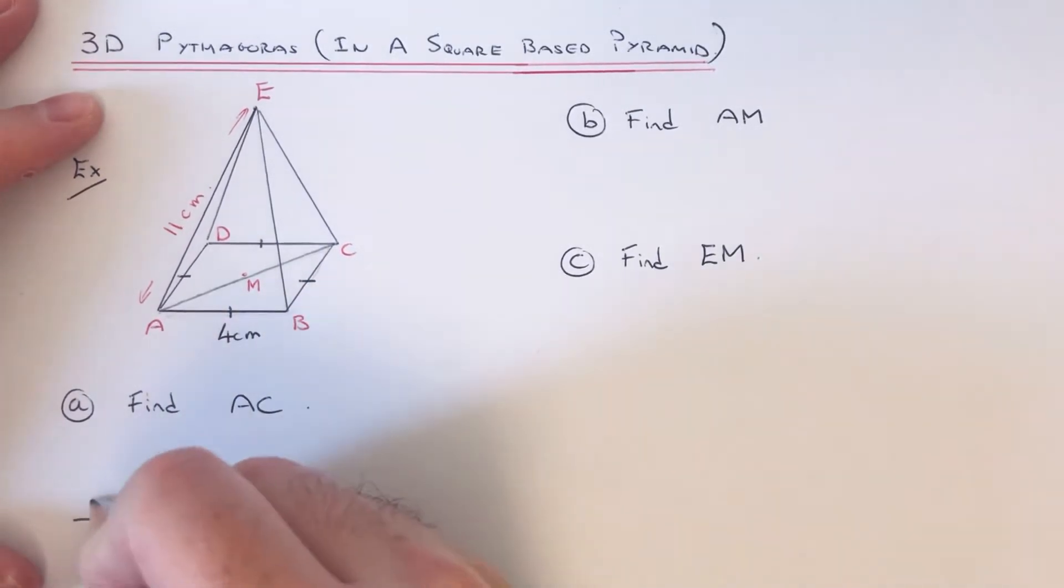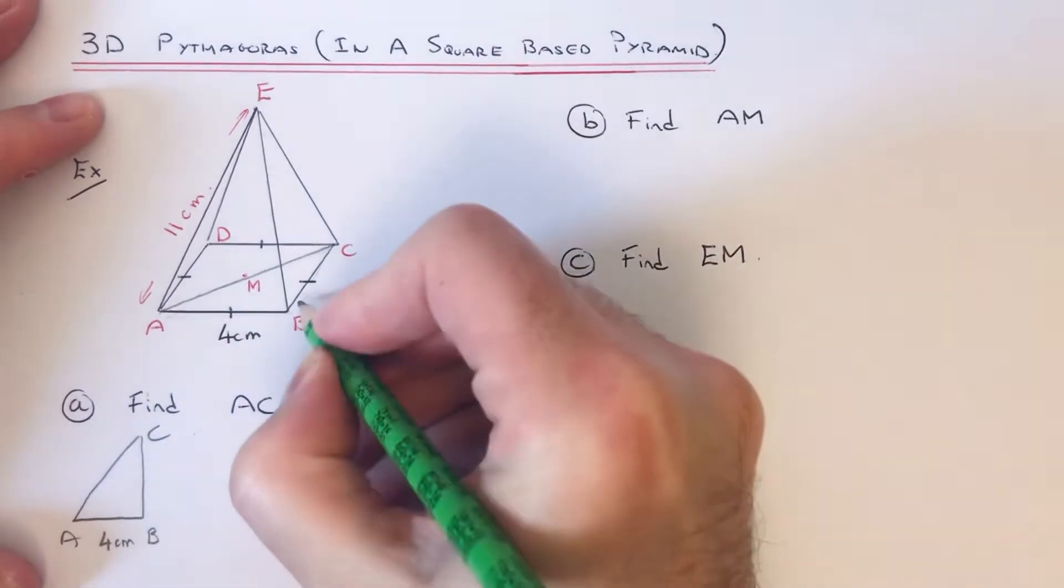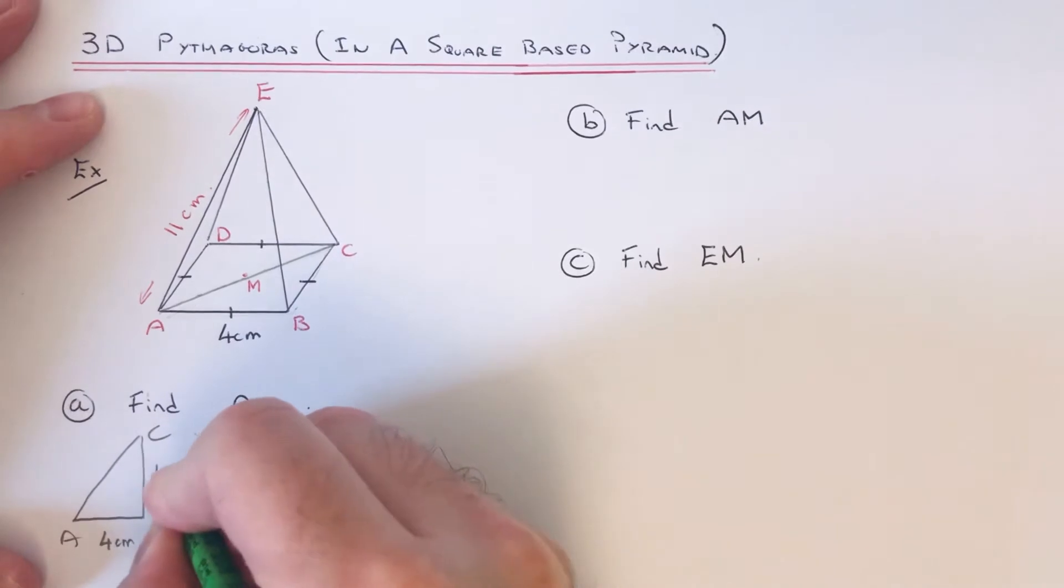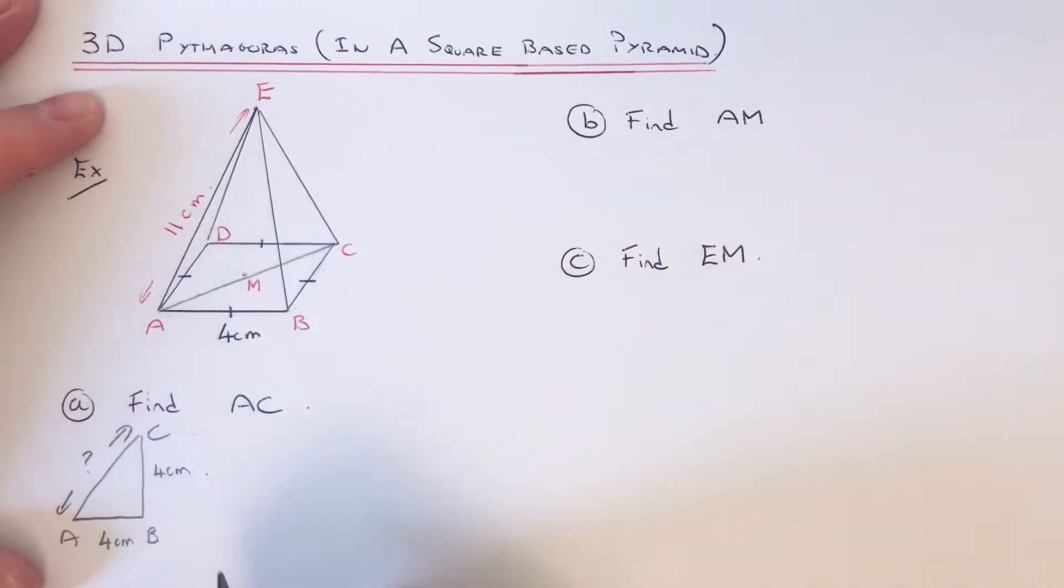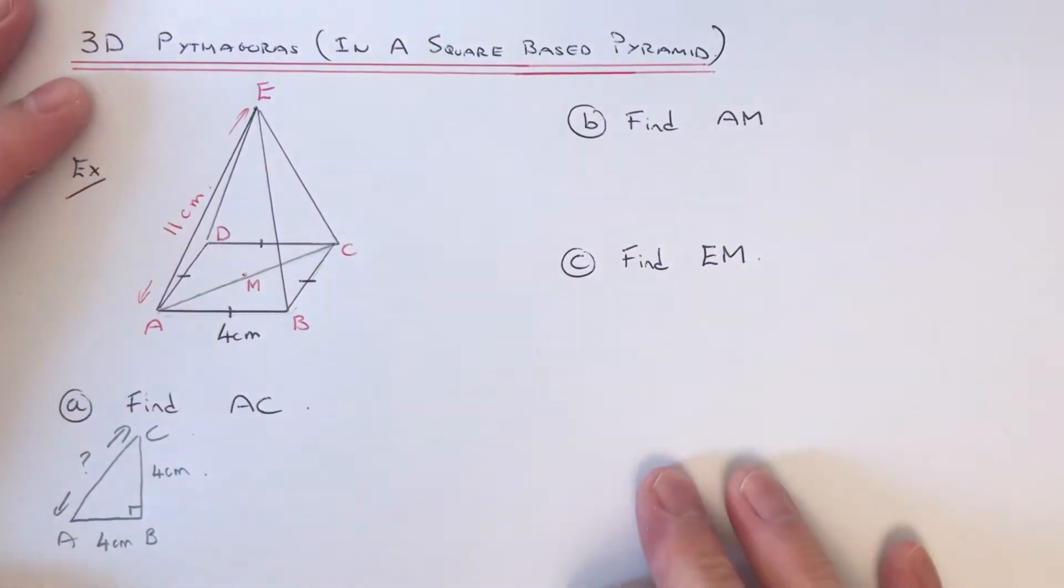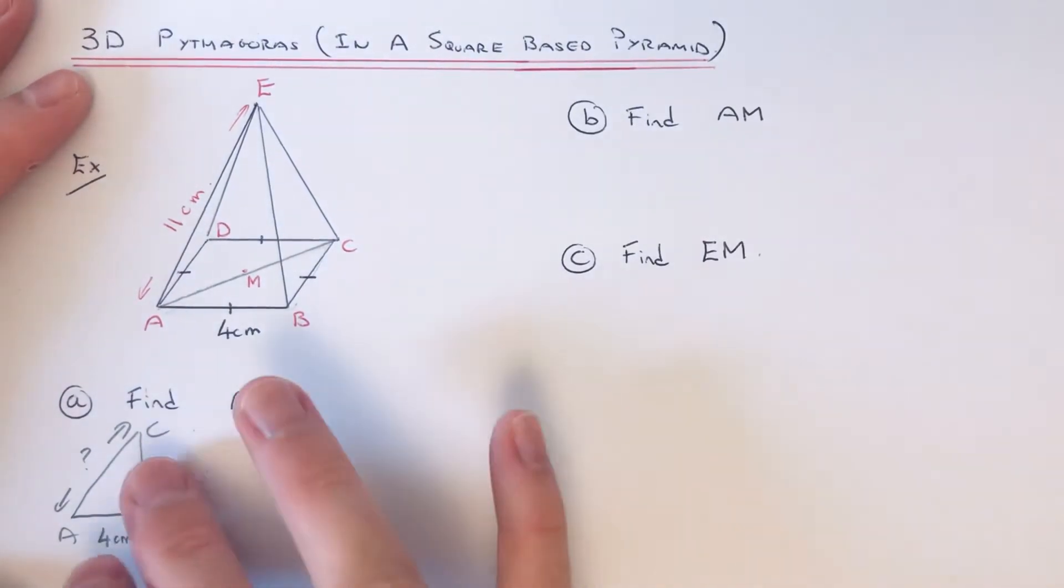So A to B is 4 centimeters, and B to C is also 4 centimeters because it's a square-based pyramid. And A to C is this side here, so it's the longest side of our right-angle triangle. Since we've got two sides and we need a third, we can use Pythagoras.